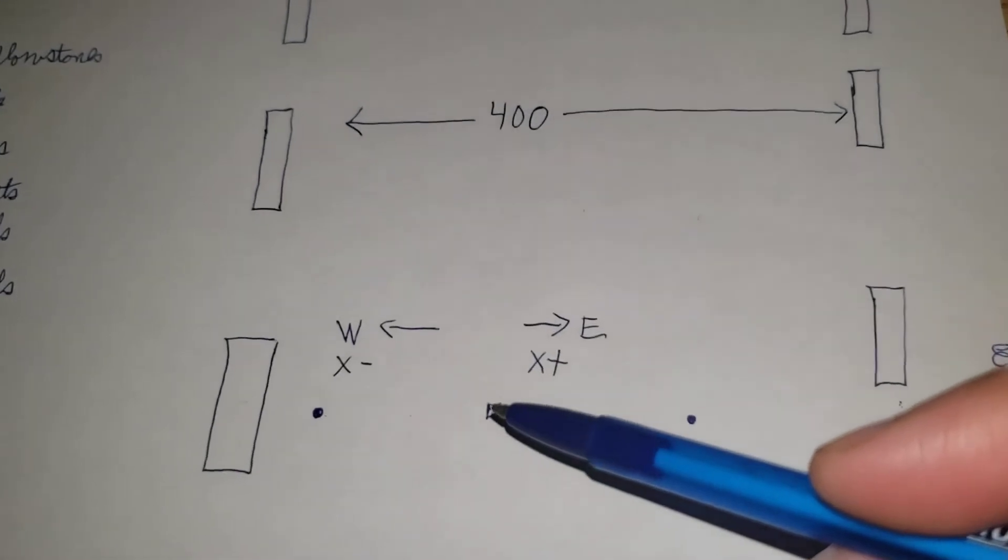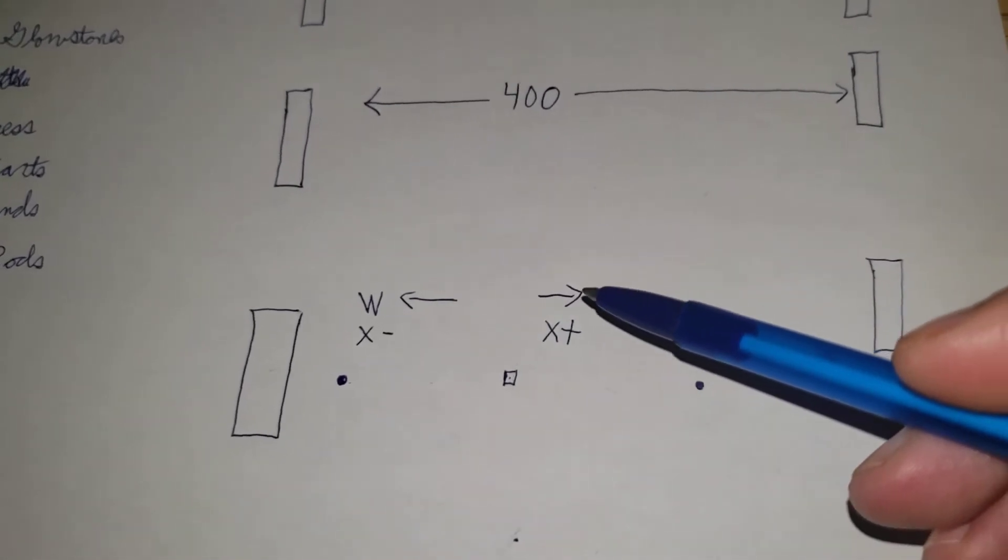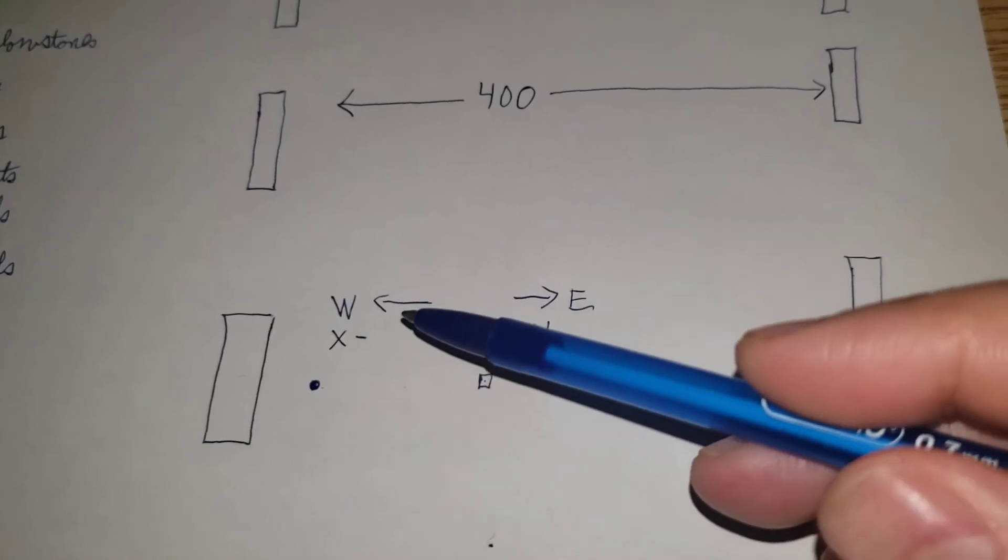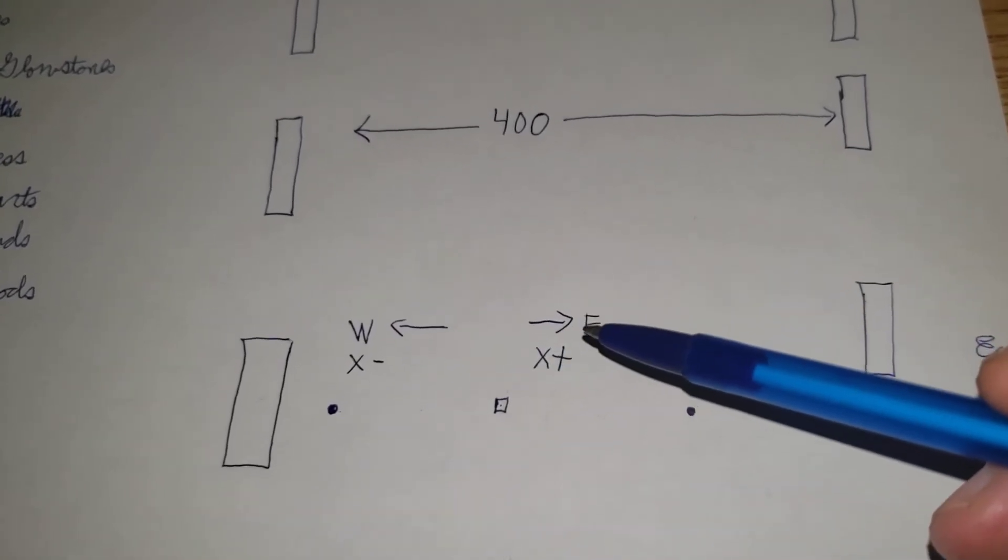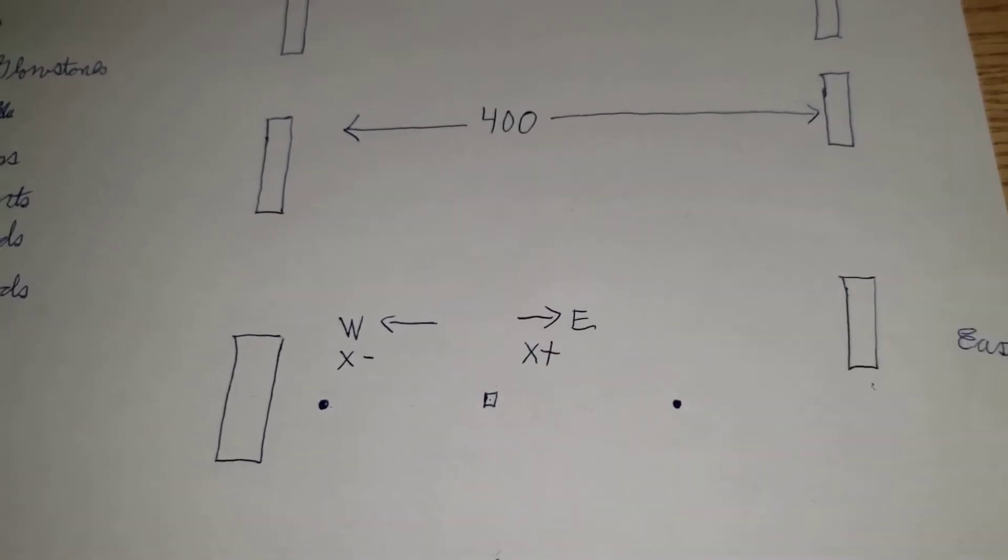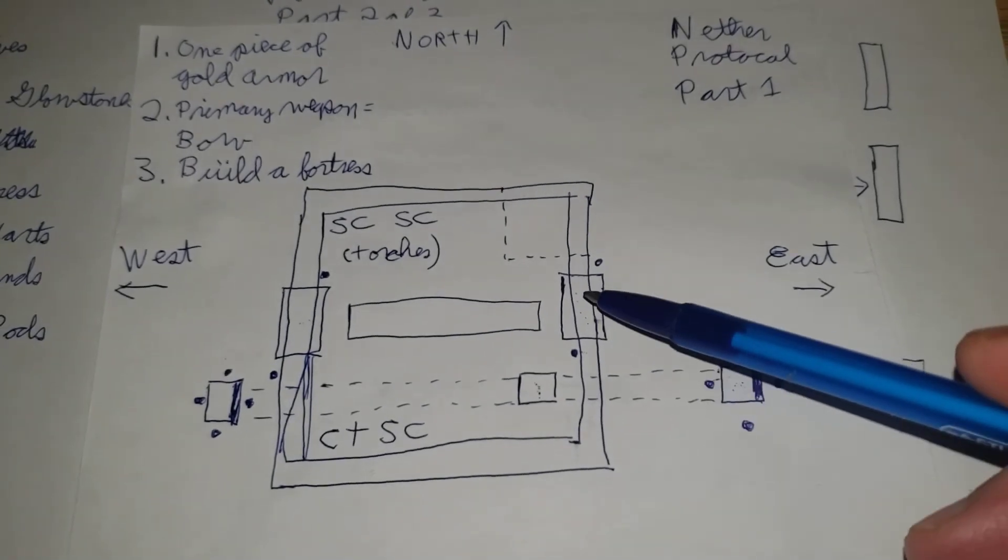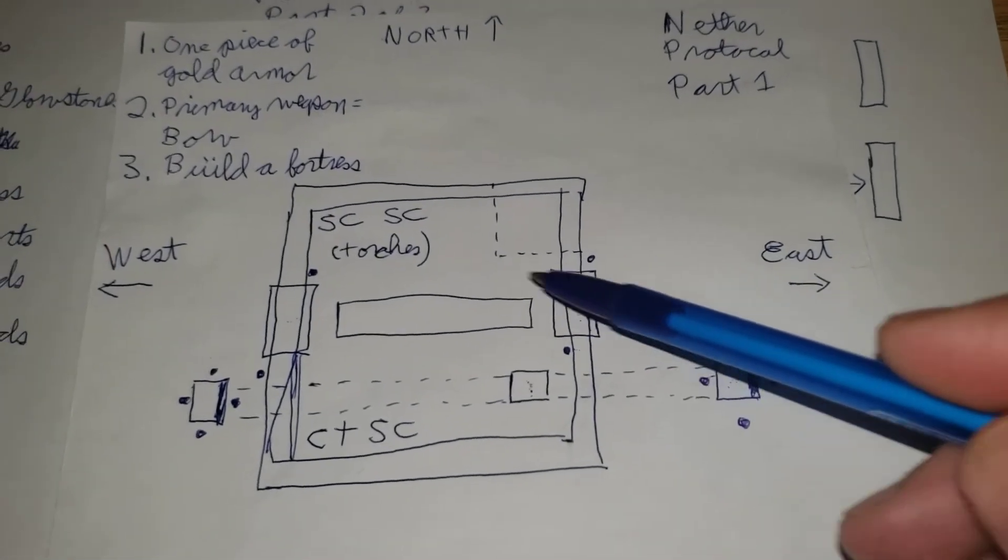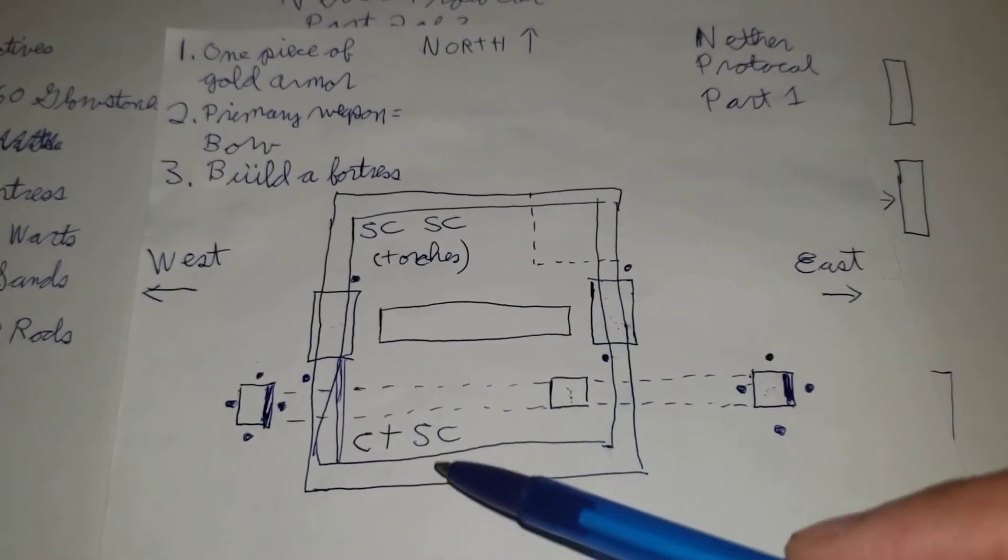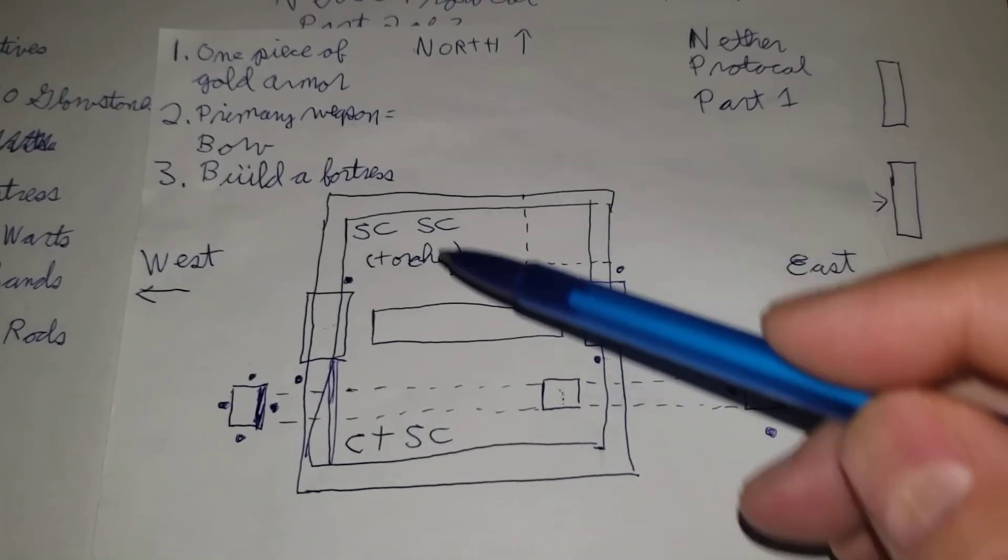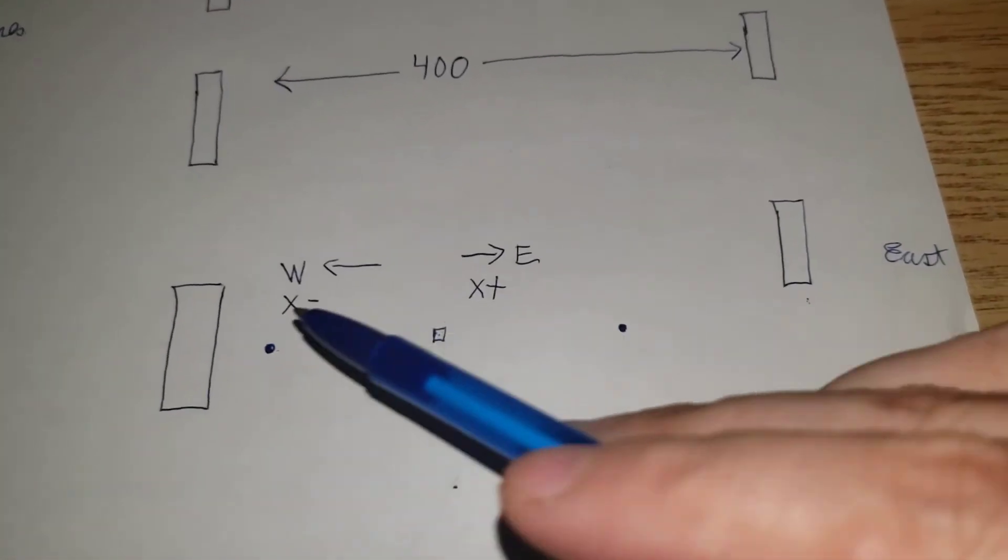So what you're going to do after exiting your fortress is you're going to go east or west at your choice. Not north, not south. You go east or west. That's why you had a door on the east and a door to the west. You did not have doors on these sides. That's why.